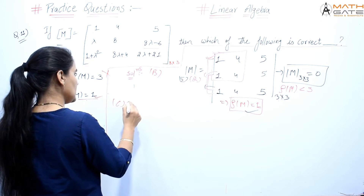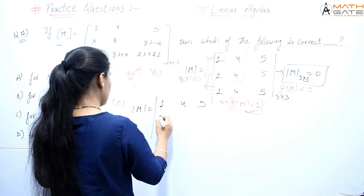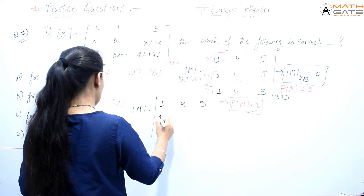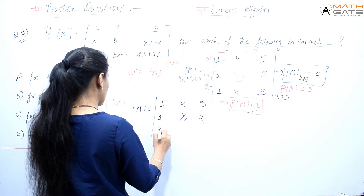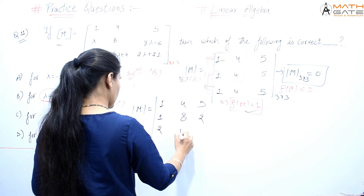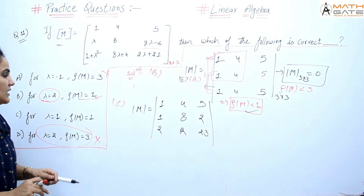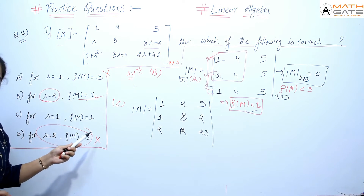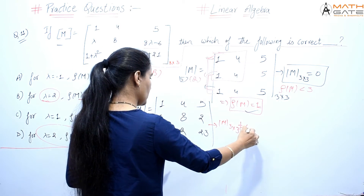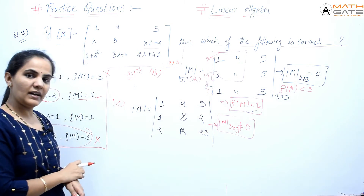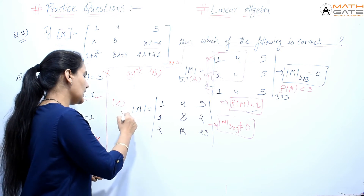Let's check option C, where lambda equals 1. Substituting λ=1: row 1 is [1, 4, 5], row 2 is [1, 8, 8−6=2], row 3 is [1+1=2, 8+4=12, 2+21=23]. Option C claims rank should be 1, but looking at this matrix, there is no obvious proportionality or dependency between rows. Computing the determinant shows it is nonzero, meaning rank equals 3, not 1. So option C is also wrong.